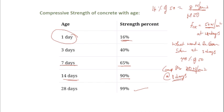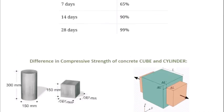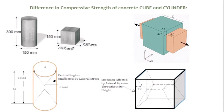In the next video, we are going to discuss the difference in compressive strength of concrete cube and cylinder specimens — these two different types of specimens give different strengths of concrete, and we will see that in detail in the next video.